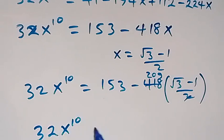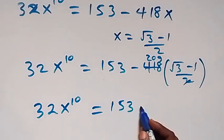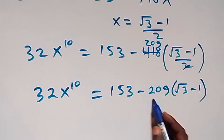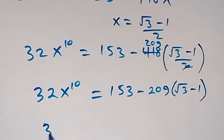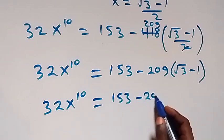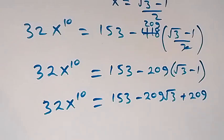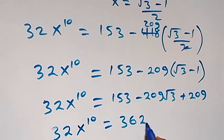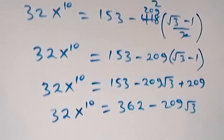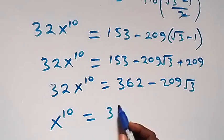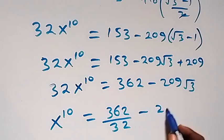The 2 in the denominator cancels with the 418 to give 209. So 32x¹⁰ equals 153 minus 209 times (√3 - 1). Opening the bracket, we get 153 minus 209√3 plus 209. Adding 153 and 209 gives 362, so 32x¹⁰ equals 362 minus 209√3. Dividing through by 32, we get x¹⁰ equals 362/32 minus 209√3/32.